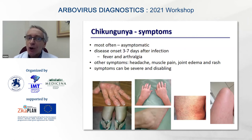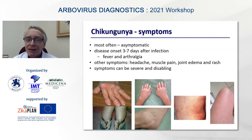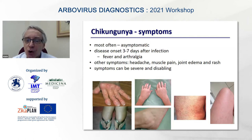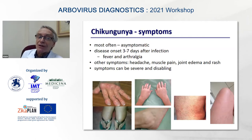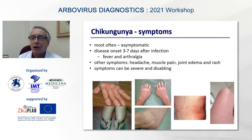When we move to chikungunya, this viral infection is most often asymptomatic, so clinical disease occurs in a low proportion of cases. Disease onset in symptomatic patients occurs less than a week after infection and is mainly shown with fever and joint pain, along with headache, muscle pain, and rash. What is particularly helpful for recognizing chikungunya is the common occurrence of joint edema, which is not limited to joints of hands and feet but also progresses into the peri-joint soft tissue. In some patients, these symptoms can be really severe and disabling.